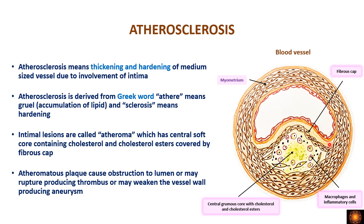That is why it is called atherosclerosis — a central soft core (ather) and hardening (sclerosis). As the atheromatous plaque increases in size, it causes obstruction to the lumen. Other consequences include ulceration of the surface endothelium, exposing the lipid core, which causes thrombosis and further obstruction. Additionally, the growing plaque can weaken the vessel wall, causing dilation and leading to aneurysms.